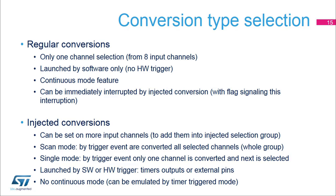Injected conversions have high priority. They can interrupt regular conversions immediately and start just after being triggered. Any of the input channels can be assigned into an injected channels group. There are two modes: scan mode, where all channels from the injected group are converted from lowest to highest channel number when a trigger occurs; and single mode, where only one channel is converted per trigger and the next channel in the group is selected for the next conversion. Injected conversions can be launched by software or by hardware from timers or an external pin, and cannot run in continuous mode, but this can be emulated using a periodic timer trigger.